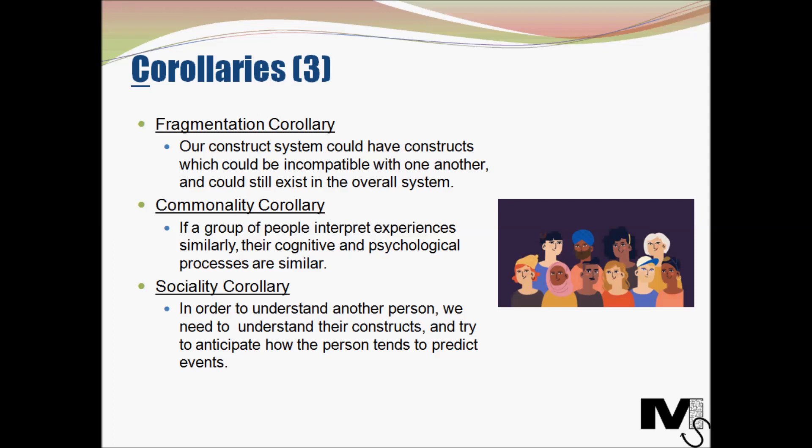The next type is the commonality corollary. Kelly suggested that if a group of people interpret experiences in a similar way, their cognitive and psychological processes tend to be similar. People from the same culture therefore tend to have similar characteristics despite different circumstances. The next type is the sociality corollary. During the course of our lives, we study not just our own behaviours but those of others. Our ability to predict and control our life goes hand in hand with how we work with other people. In order to understand another person, we need to understand their constructs and try to anticipate how the person tends to predict events themselves. Understanding constructs therefore plays a role in understanding social psychology.